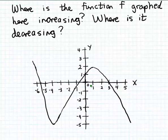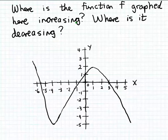In this example, we're shown a function called f, represented by a graph, and we want to use the graph to discover and write down where the function is increasing, and also where the function is decreasing. We want to write our answers using interval notation. When we ask where a function is increasing or decreasing, what we mean is where the outputs from the function are increasing and where the outputs from the function are decreasing as the inputs increase.